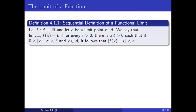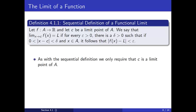Returning to the definition, we want to make a few remarks to connect this to our sequential definition of a functional limit. First, notice that, as with the sequential definition, we only require c to be a limit point of the domain set A, which means that c doesn't necessarily have to be in the domain set A. In other words, the function f may not be defined at c. Next, we never consider domain points equal to c. This is represented by the restriction that the distance between a domain point x and c must be strictly positive. This is also necessary since c may not be in the domain of the function f.